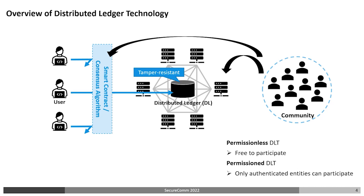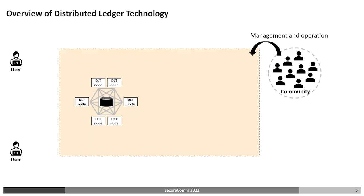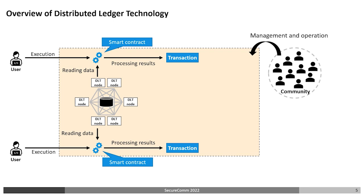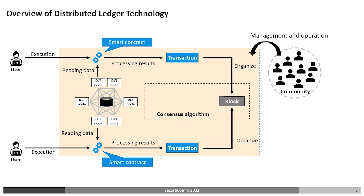One is a permissionless DLT in which participation is allowed freely, and the other is a permissioned DLT in which only authorized entities are allowed to participate. In this research, we focus on the permissioned DLT. When a user executes a smart contract, the smart contract reads data from the distributed ledger and performs processing. The result is processed into a transaction which is stored in a block. Only transactions properly accepted by the consensus algorithm are reflected in the distributed ledger.